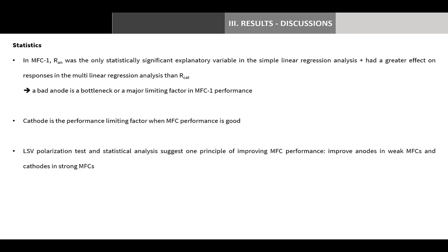Cathode is the performance limiting factor when MFC performance is good. In a previous study, cathode was the main performance limiting factor in an MFC treating brewery wastewater, suggesting that reactor performed well. LSV polarization test and statistical analysis suggest one principle for improving MFC performance: improve anodes in weak MFCs and cathodes in strong MFCs.